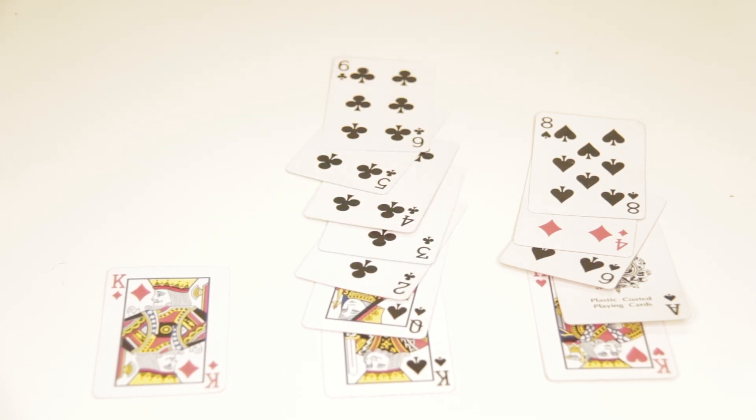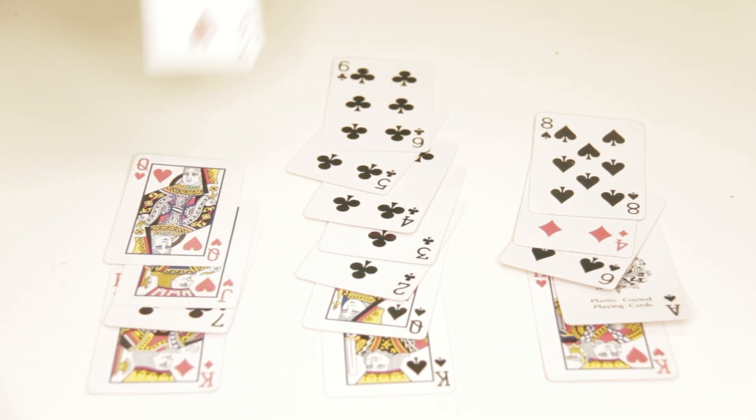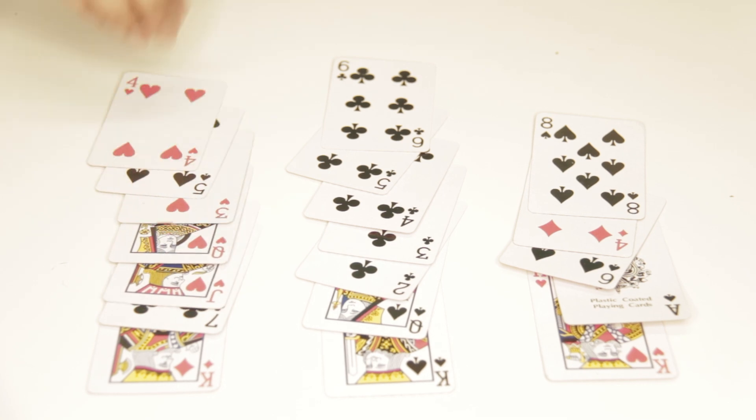And then for Labour, they got the highest score, which was seven. One, two, three, four, five, six, seven.